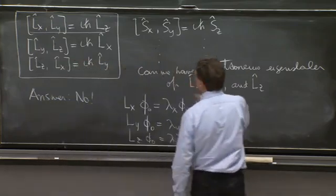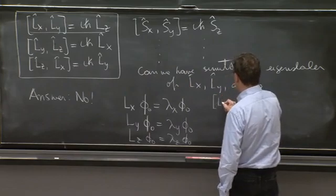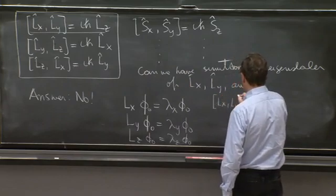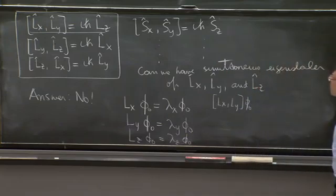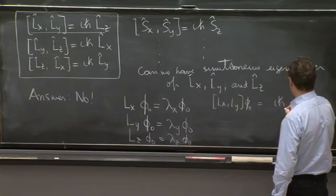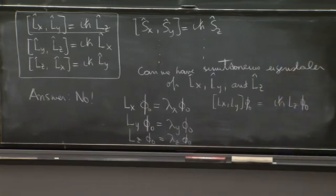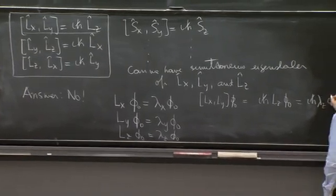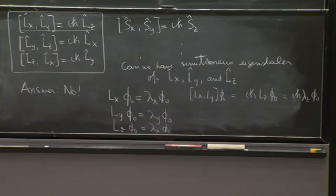So what is the complication? The complication are those commutators. If you do Lx, Ly on phi naught, you're supposed to get I h bar Lz on phi naught times phi naught because it's supposed to be an eigenstate.